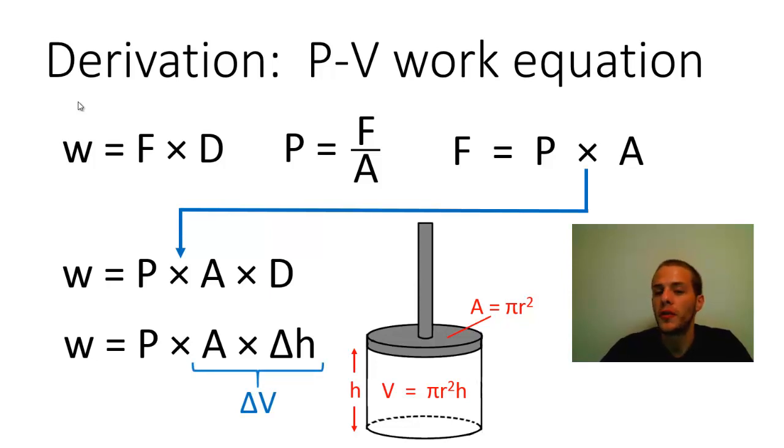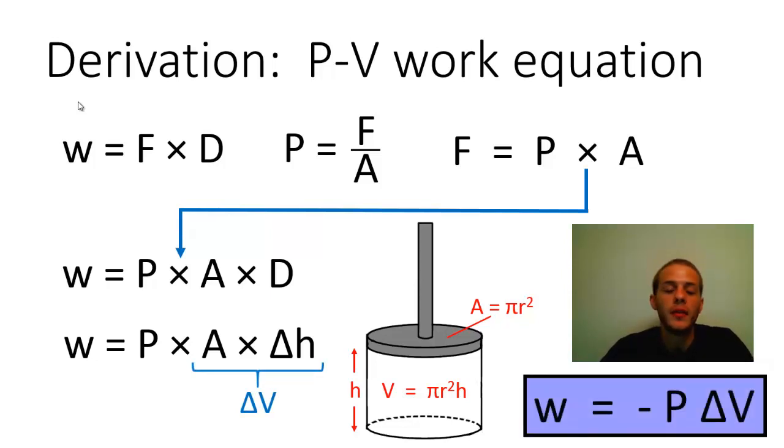And so under conditions of constant pressure we arrive at this equation right here. So as long as we know that external pressure and we know the volume change, which can easily be determined if we know the initial and final heights of that piston, as well as the area, the cross sectional circular area of the piston, then we can calculate the change in volume of that cylinder throughout the process.